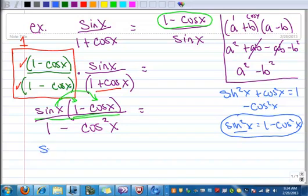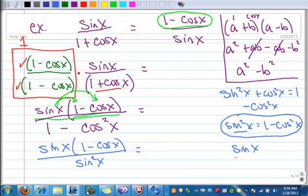So in the numerator, I still have sine x times the quantity 1 minus cosine x all over sine squared x. And now at this point, I can simplify. So I've got sine x on the top. I'll show that over here. So I've got sine x on the top. Sine squared on the bottom. So when I simplify, this is gone and one of these is gone.